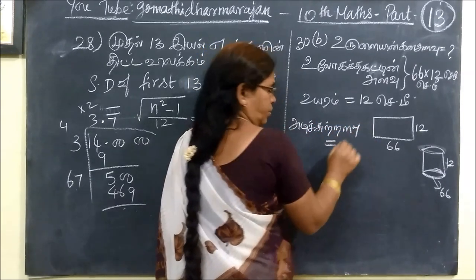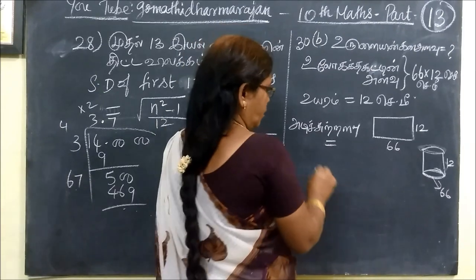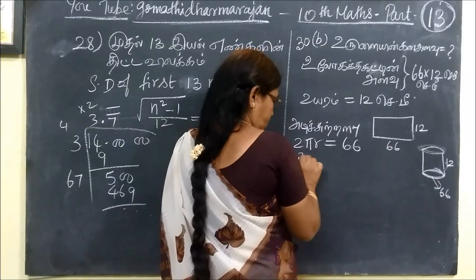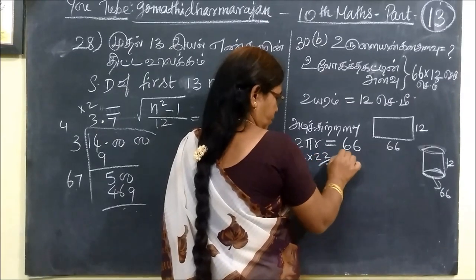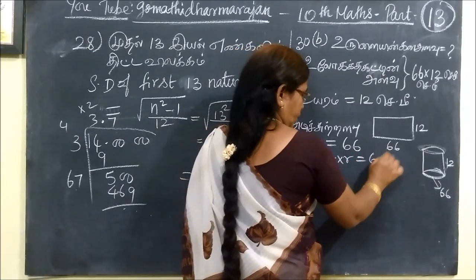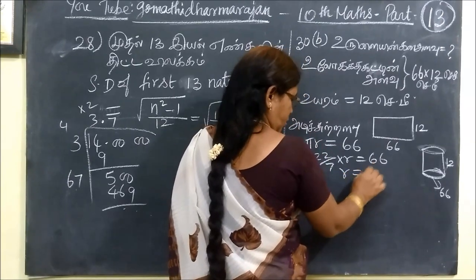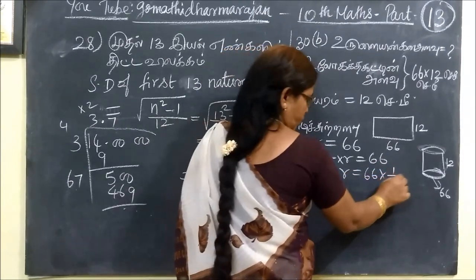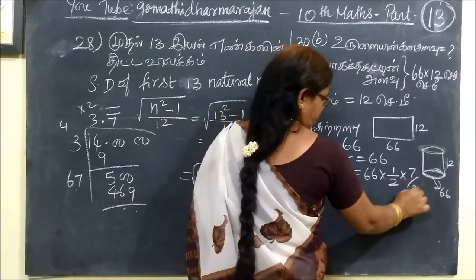Question 30. Volume of cylinder equals pi r squared h. Using 22 by 7, we have 1 by 2 times 7 by 22.